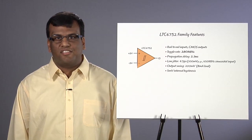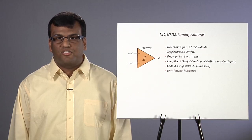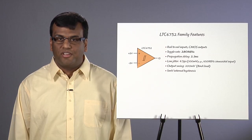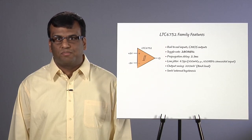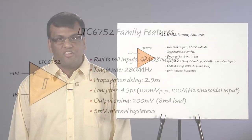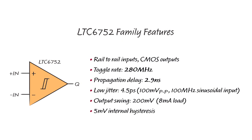Today I'm introducing the LTC6752 family of extremely fast rail-to-rail input CMOS output comparators. These comparators have industry-leading speed performance, exhibiting toggle rates as high as 280 MHz and propagation delays of only 2.9 ns.